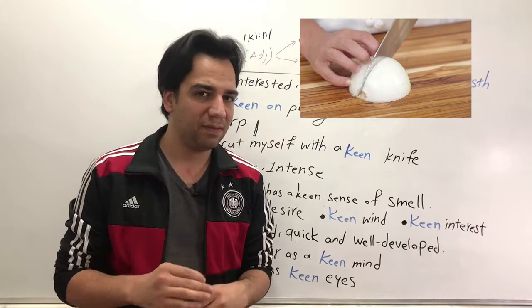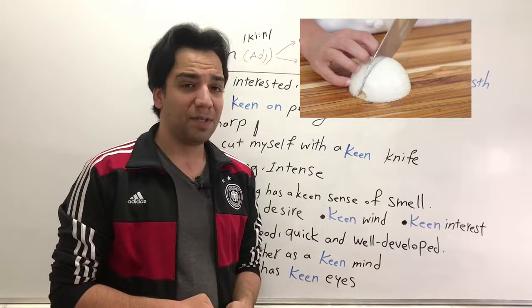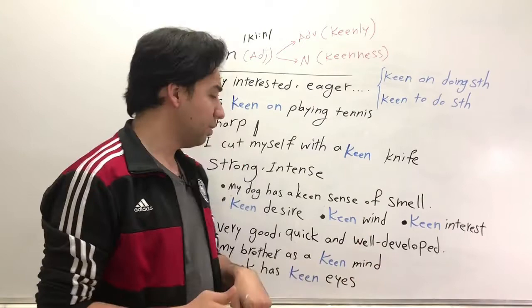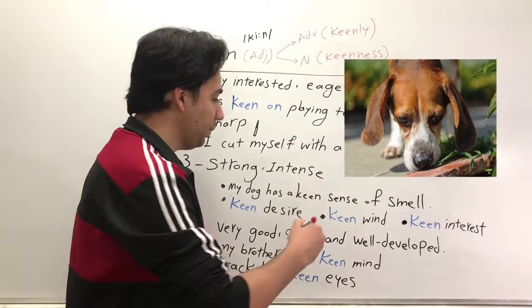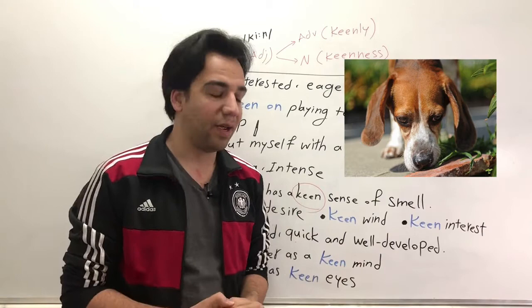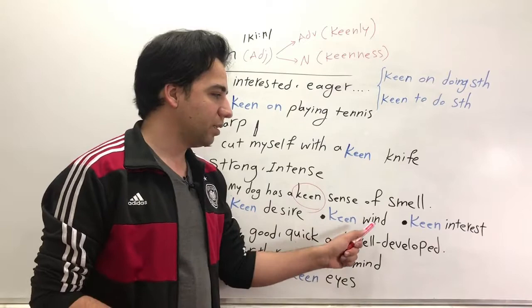The third meaning of keen is strong and intense—something that is very strong and intense. For example, my dog has a keen sense of smell. So here, a keen sense of smell means very strong sense of smell. The dog can find any smell very fast.